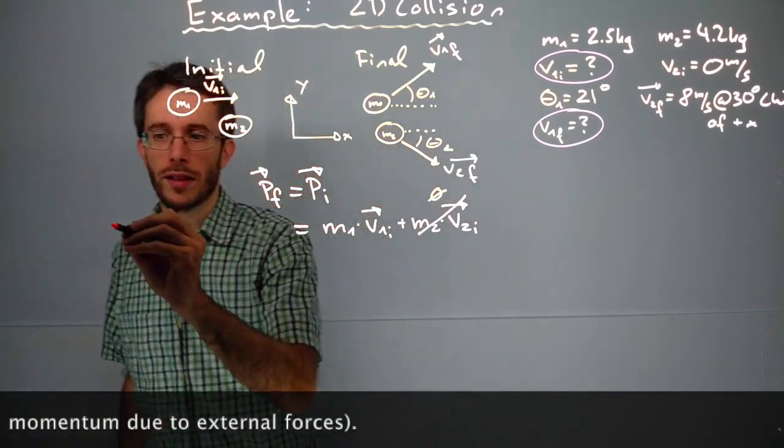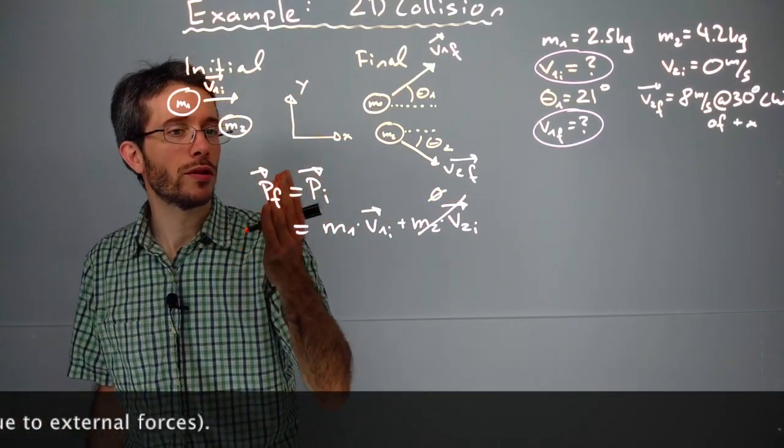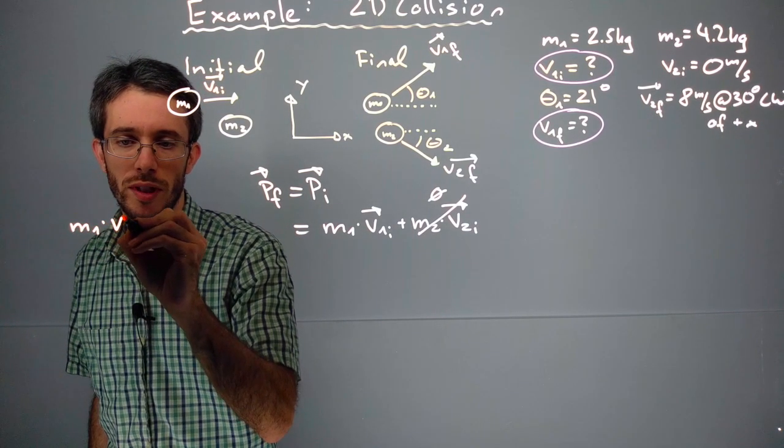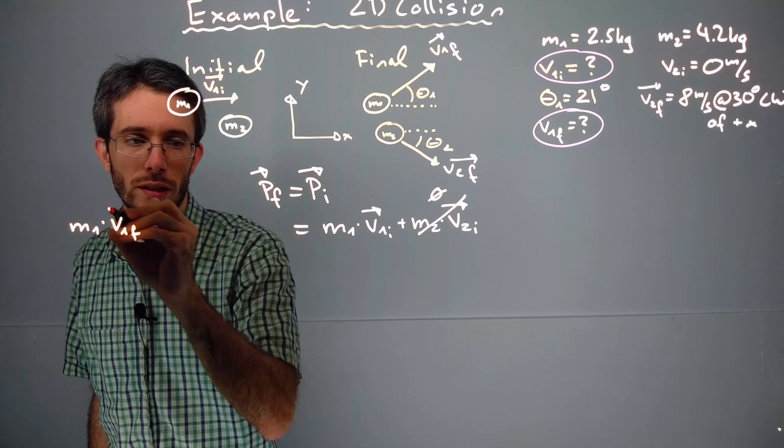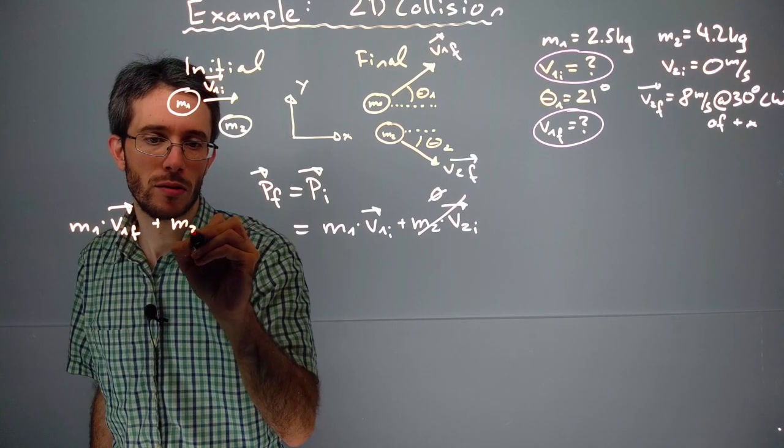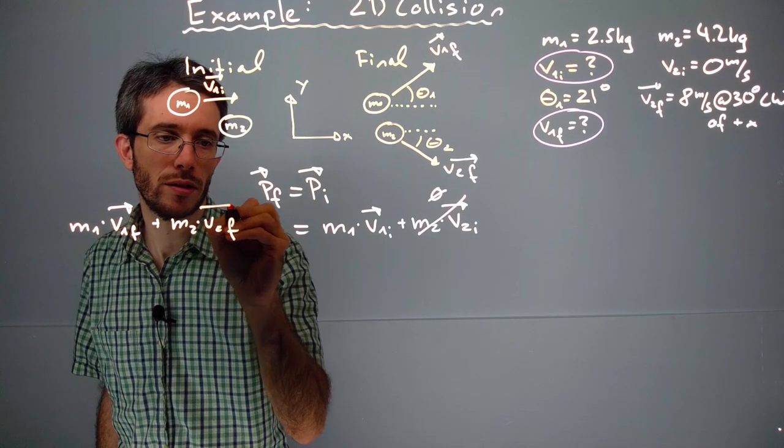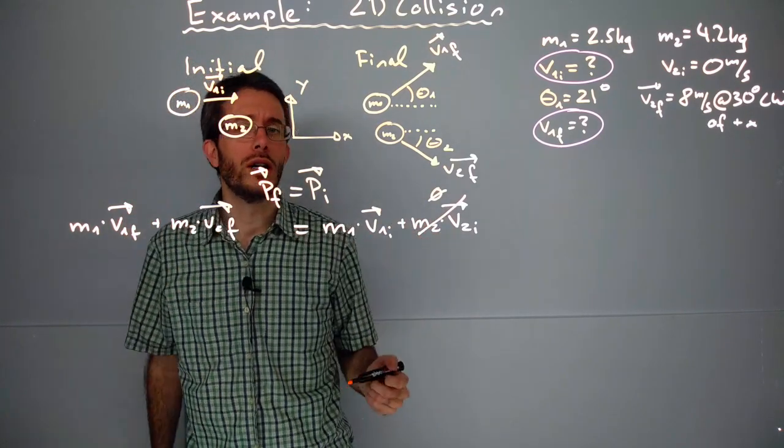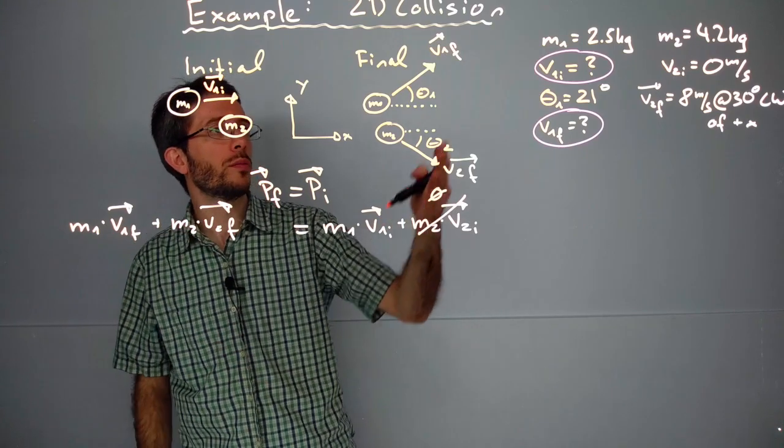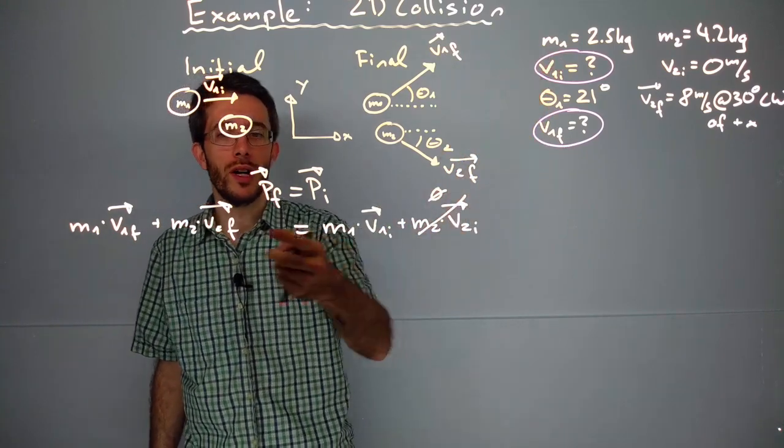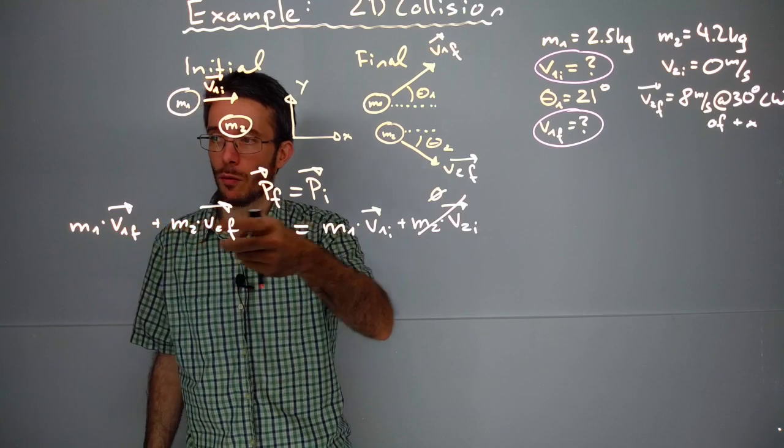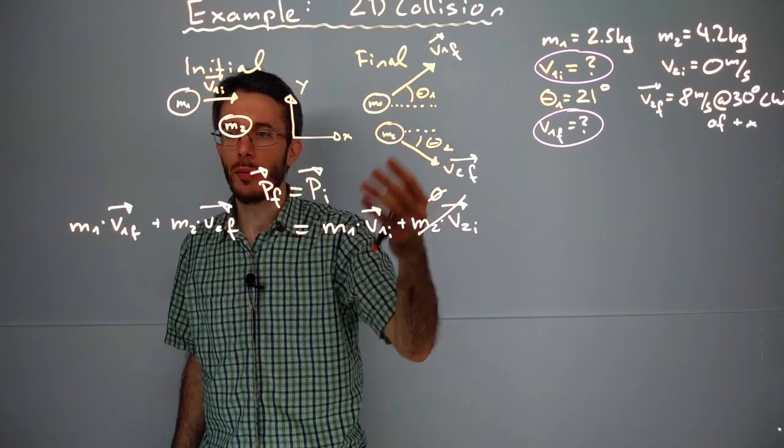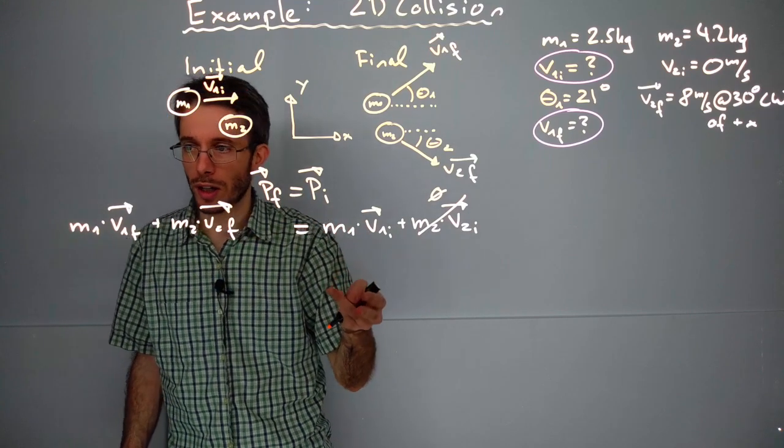At the end I have two objects moving, so mass 1 times v1 final plus mass 2 times v2 final. This is a vector law, so there are two equations: an x equation and a y equation. Let me rewrite this by splitting up the velocities into x and y components.